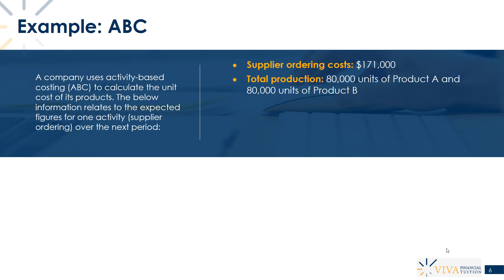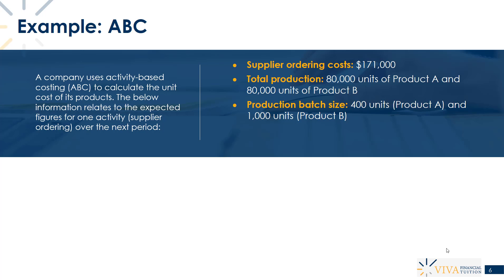We produce two different products: product A and product B, and we're expected to make 80,000 units of both products over the next period. Product A is produced in smaller batches of 400 units each time, while product B is produced in larger batches of 1,000 units.